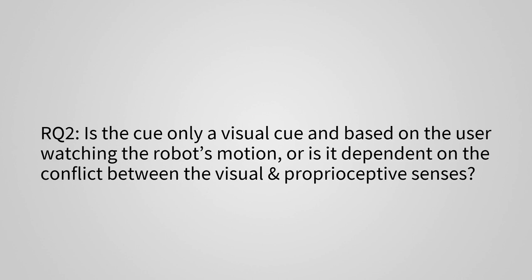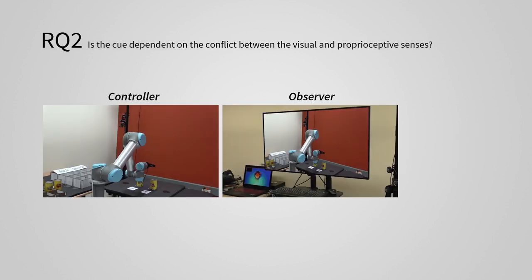The second research question is about the mechanism of the cue. Is the cue only a visual cue and based on the user watching the robot's motion, or is it dependent on the conflict that we create between the visual and proprioceptive senses? To test this, in the next task, we had two conditions.